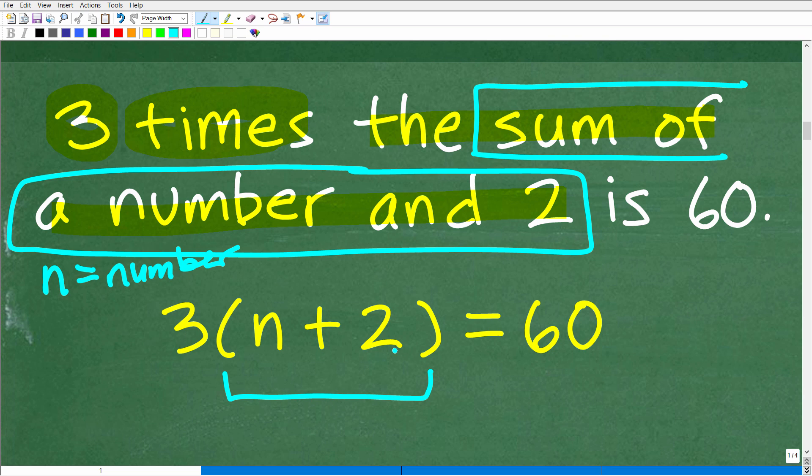Now, if you didn't use parentheses, this would be very confusing. So, again, when you see sum or difference, put parentheses around this. So, three times the sum of a number and two is this. This is three times the sum of a number and two is, this is our little equal sign right here, 60.